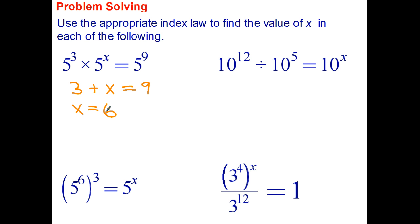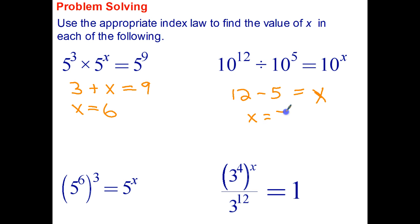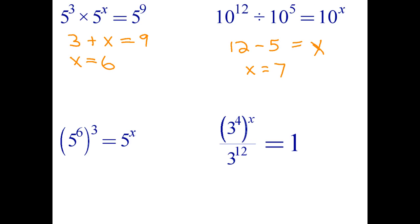Welcome back. This one: 10 to the 12th divided by 10 to the 5th equals 10 to the x. This is index law number 2 — to divide powers with the same base, we subtract indices. So in this case we can say 12 minus 5 equals x. We write an equation involving just the indices, and therefore x equals 7.